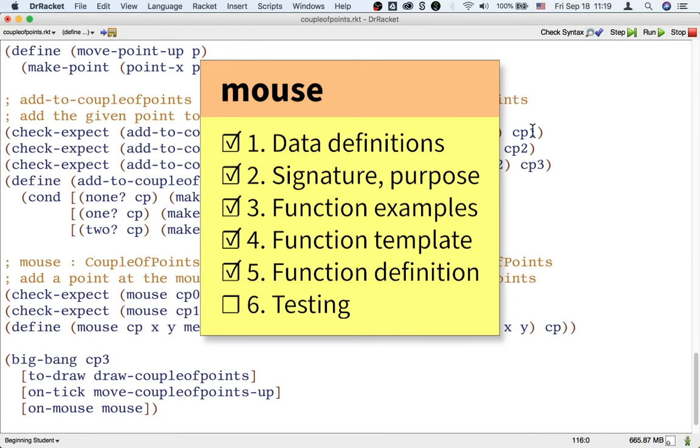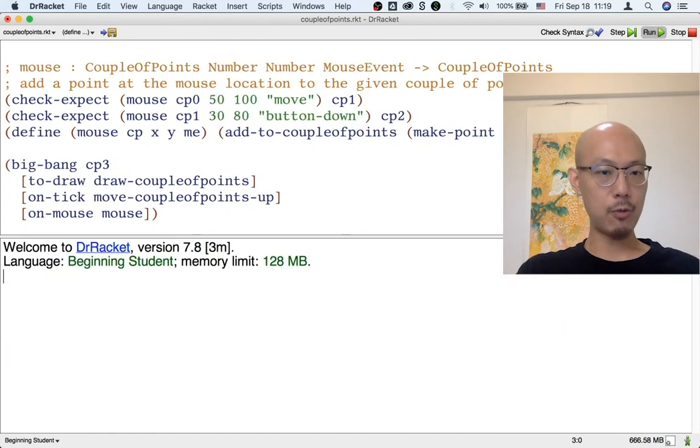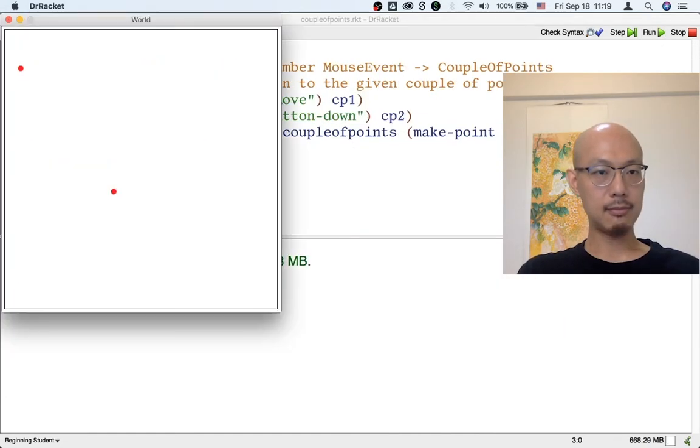We can test it in two ways. The more fun way is to run the Big Bang. Okay. So, now I can move the mouse, and look, whenever I move the mouse, it's replacing the oldest point by where the mouse is. So, the older point goes away, and then the mouse location becomes the newest point. Okay. And if I move the mouse fast enough again, I get two points that are still moving up. That's one way to test a function.